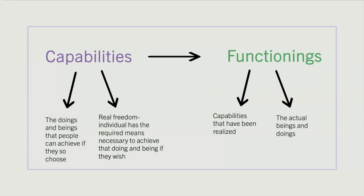The approach focuses on capabilities, the potential doings and beings that people can achieve if they so choose. For example, someone could lack the capability to afford education, preventing them from the functioning of a good education. Conversely, someone could have all the money in the world, all of the capabilities, but choose not to use it, therefore not resulting in a functioning.